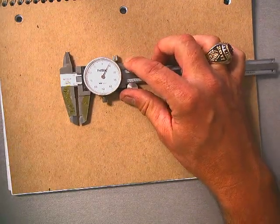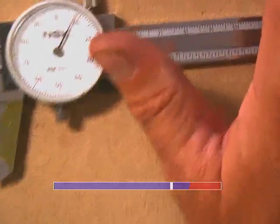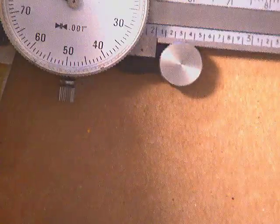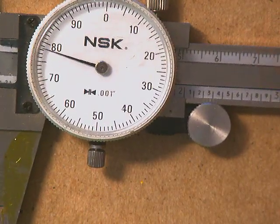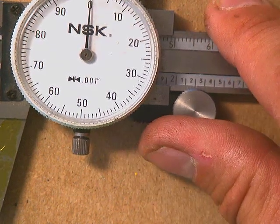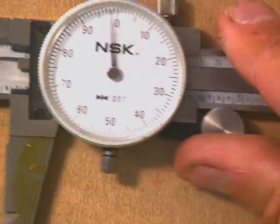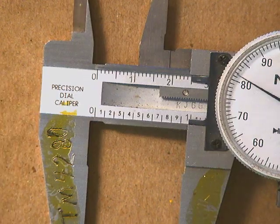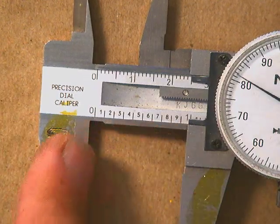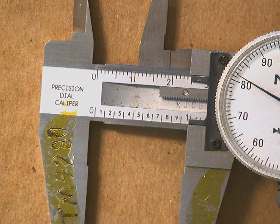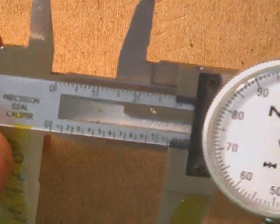When reading a dial caliper, we have a few places where we start. When we open it up, you see the graduation scale. This first graduation scale is to an inch, broken down into nine equal spaces. So each one of those is a tenth of an inch.